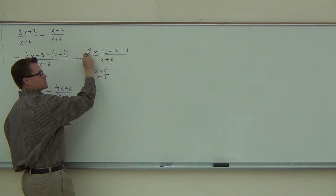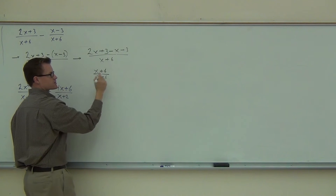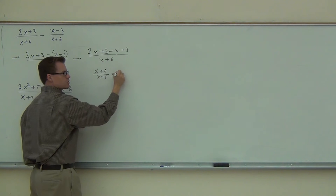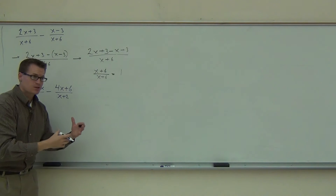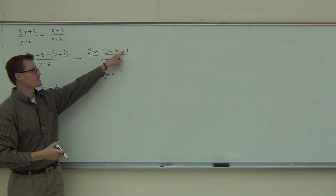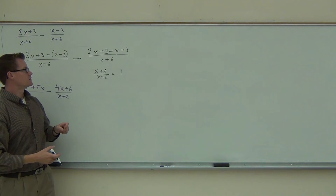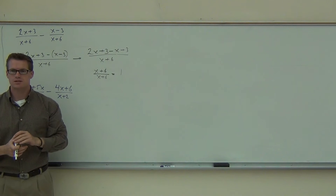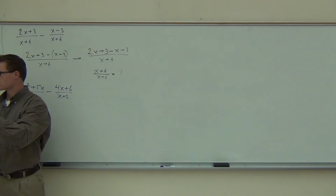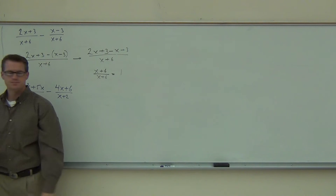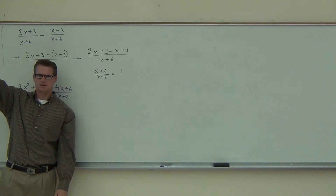We have the 2x and the minus x that gives us x. We have 3 plus 3 that gives us 6. You're going to get a 1 out of that. If you did this incorrectly — if you forgot to change that sign — you're going to end up getting x over x plus 6. That wouldn't be a good thing if you mess up that constant at the very end. We got 1 out of that. Good.